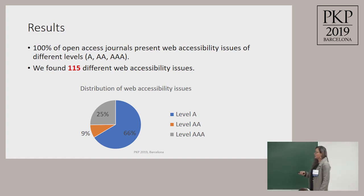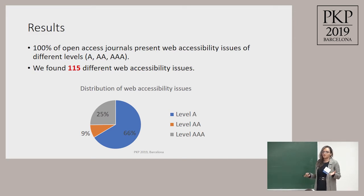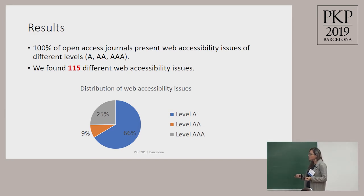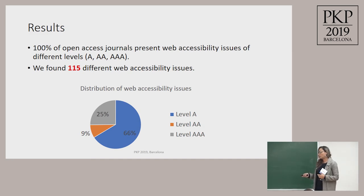We found that 100% of the journals we tested have accessibility issues — at minor or major level — but all of them have one or more issues. We found 115 different accessibility issues, but most of them were present in 90% of the journals. About 10 different issues appeared in the majority of the journals. We have 66% of issues at Level A. We have 9% just for Level AA, and 25% at Level AAA — which are the biggest problems. Sometimes those issues can only be solved by developers because they relate to the structure of the page.